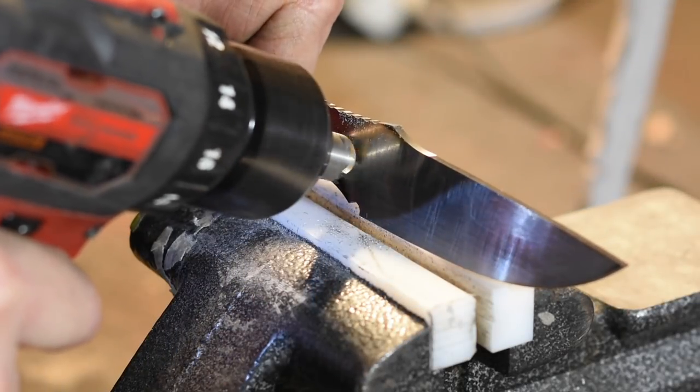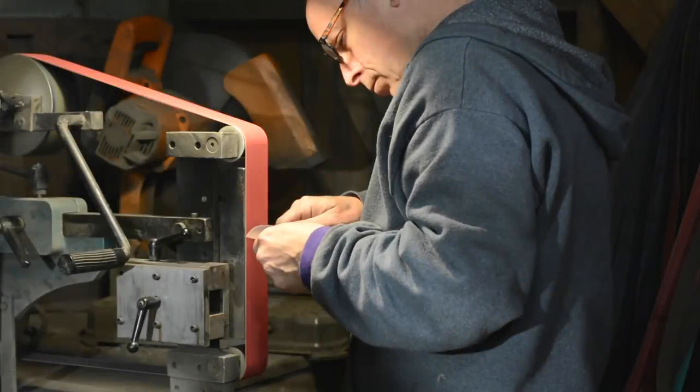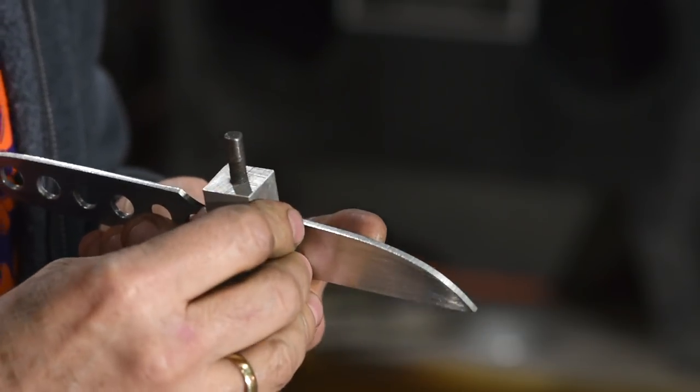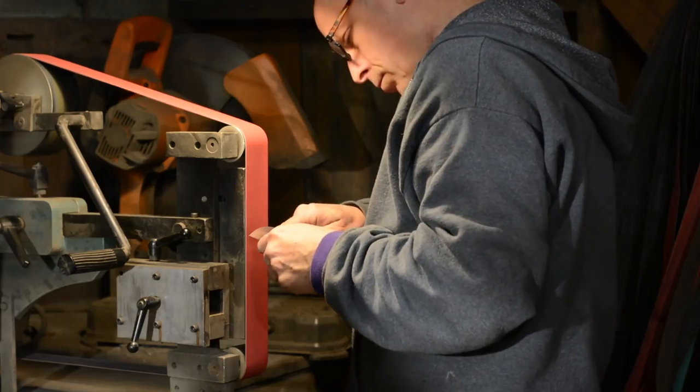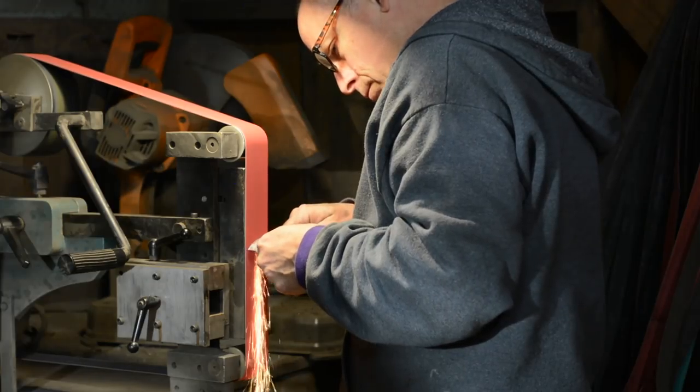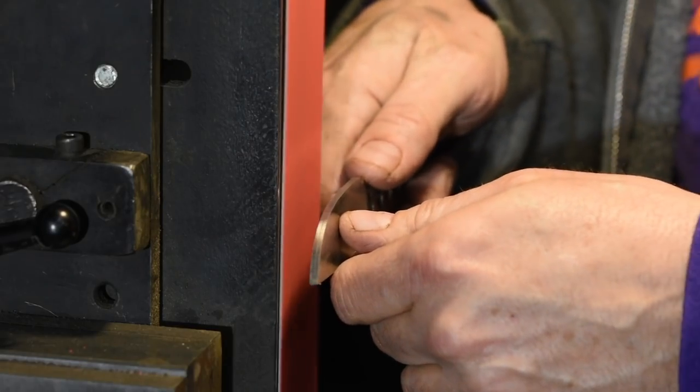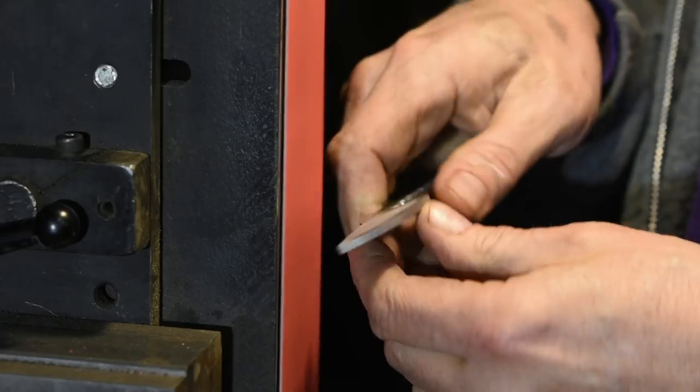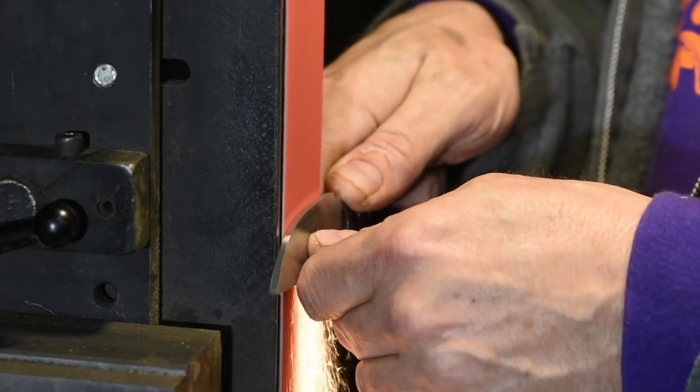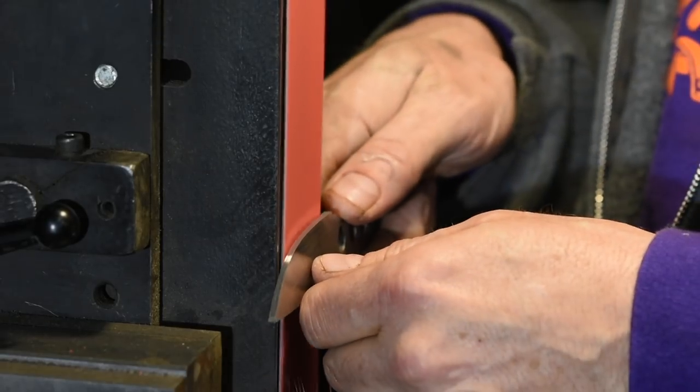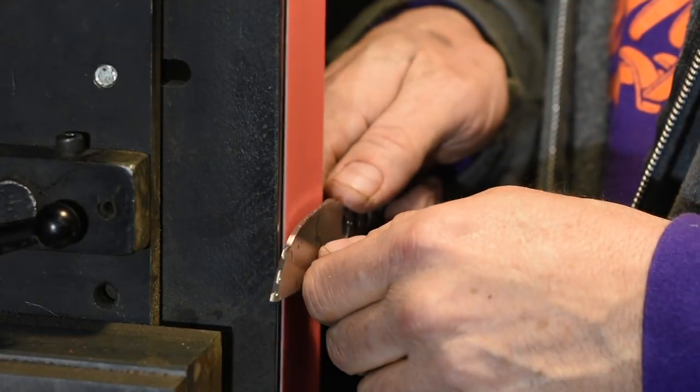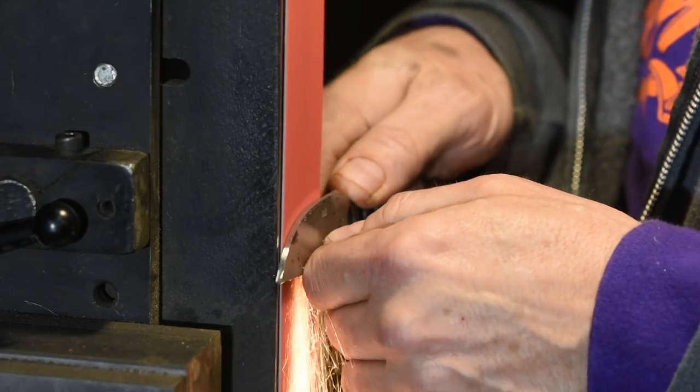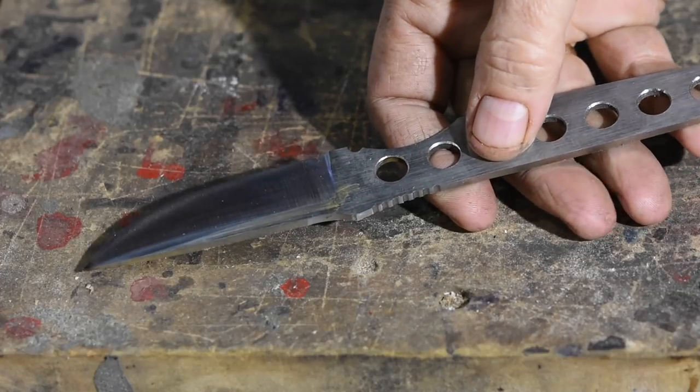Next, I'll chamfer the edges of the handle holes using a countersink and a hand drill. The next step is to grind the bevels. After marking a center line using a scribe, I'll grind the bevels on the belt grinder. The center line helps me to maintain symmetrical bevels. I was talking to someone in the shop as I was shooting the video, and of course, I didn't end up paying full attention to what I was doing. The bevels should be ground all the way back to the Spanish notch, basically bisecting the notch, but I sort of spaced out on that, so I'll fix my goof after heat treat.